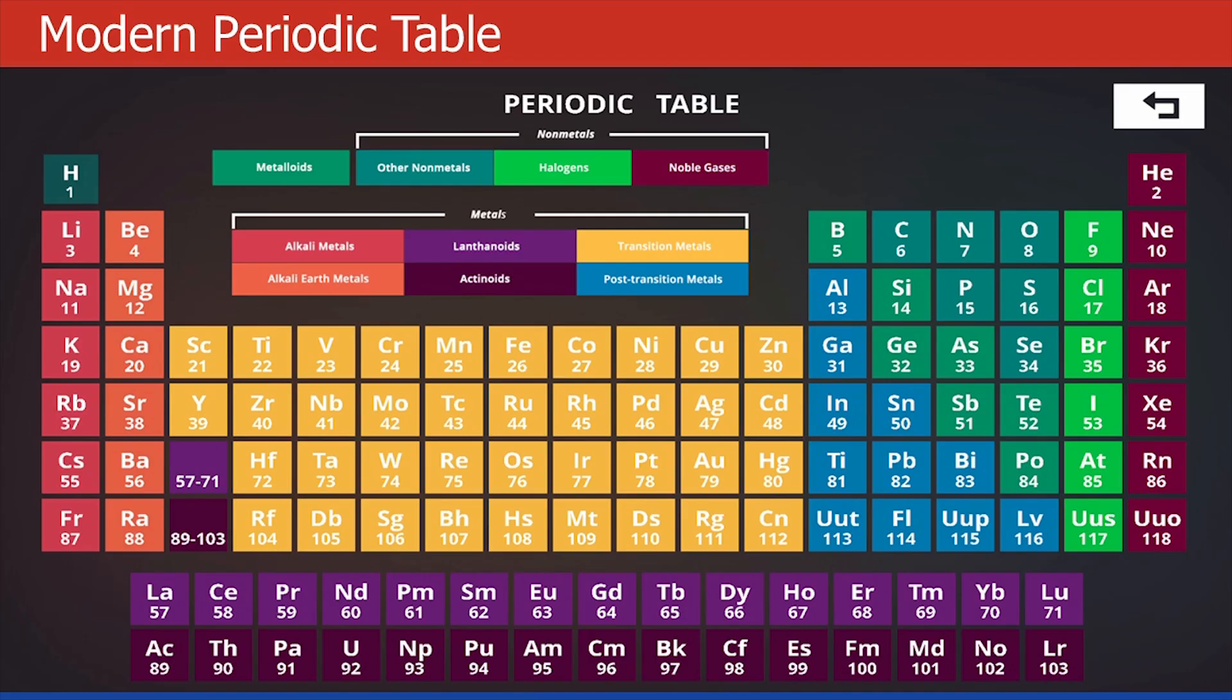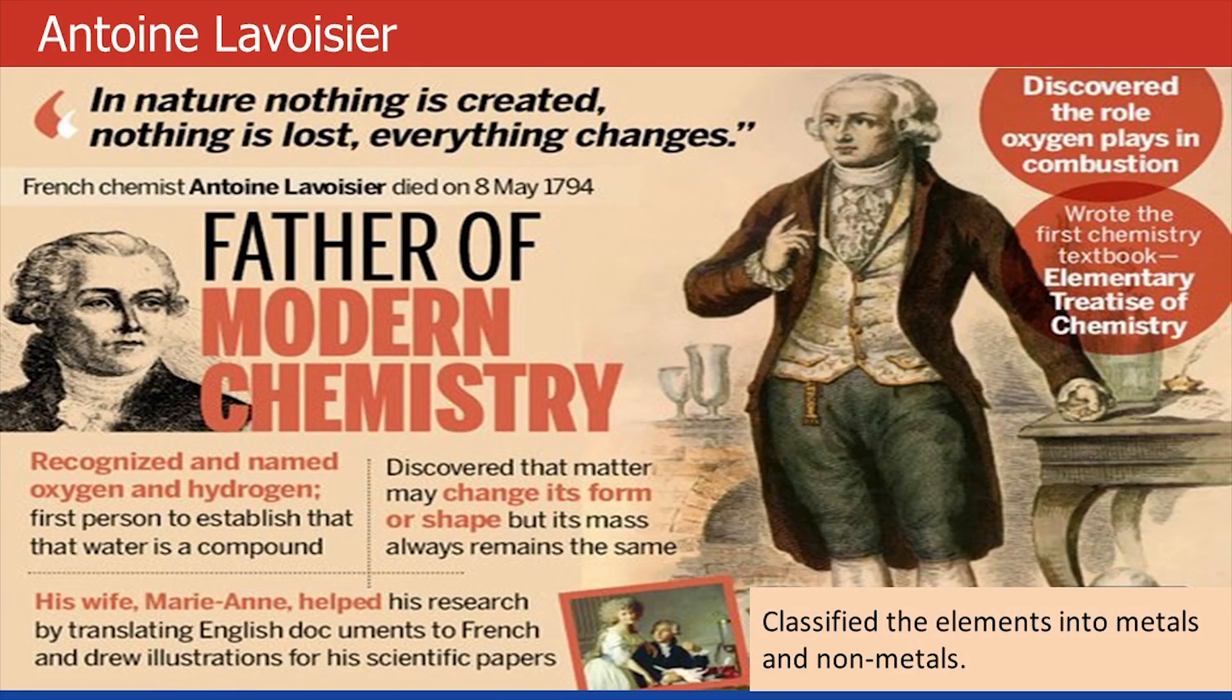Before we dive into understanding periodic table in detail, let us have a look at its history of evolution. We can give the credit of its beginning to a French scientist, Antoine Lavoisier, who is also known as the father of modern chemistry. In 1777, he was the first to establish that sulfur was an element and not a compound.